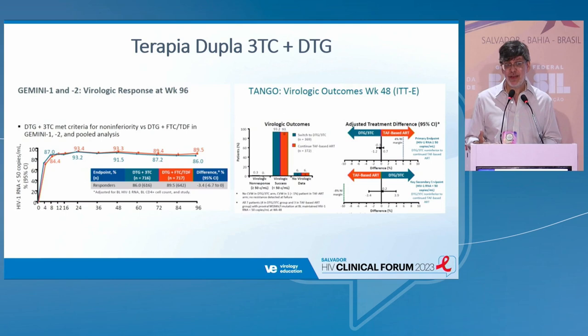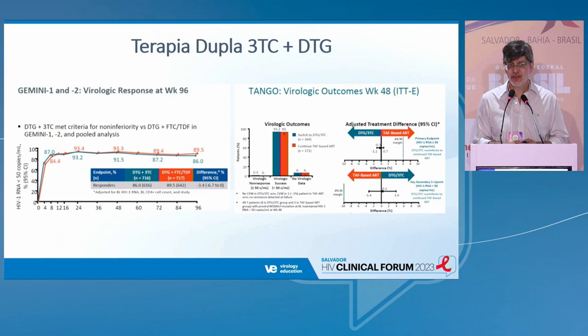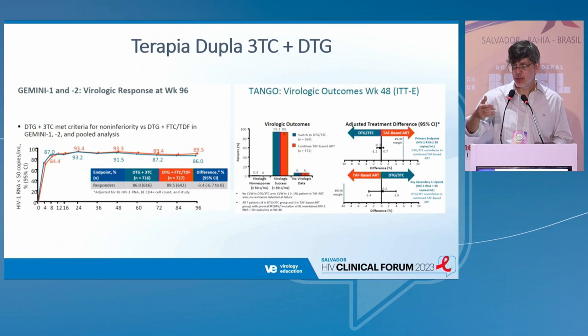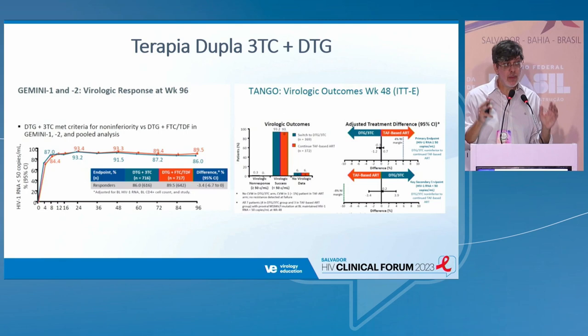We also have TANGO, which is a more conservative maintenance strategy: patients who are properly suppressed were randomized to keep their regimens versus switching to lamivudine and dolutegravir. This is also showing benefits at four-year follow-up — effectiveness and no resistance whatsoever. After TANGO we had SALSA, including Brazilian patients, and RUMBA with published data. MAMBO and CALYPSO are on the way, and maybe even SAMBA.